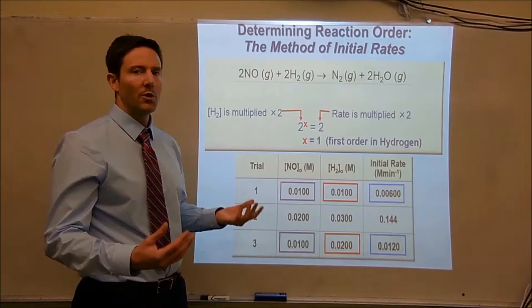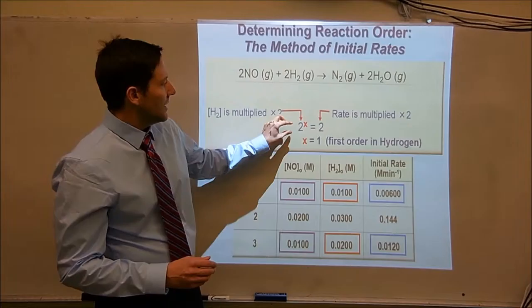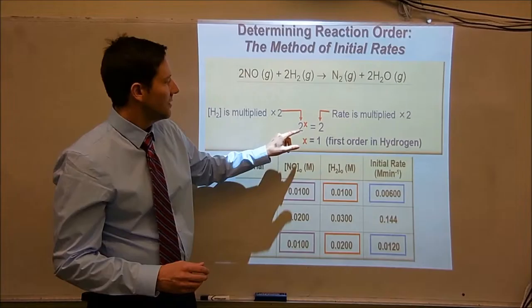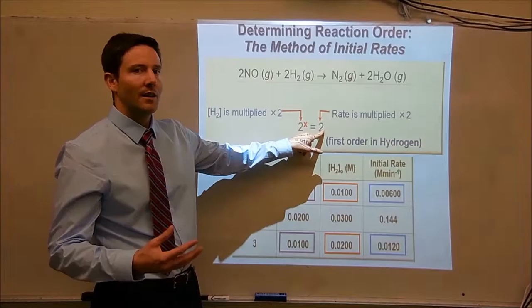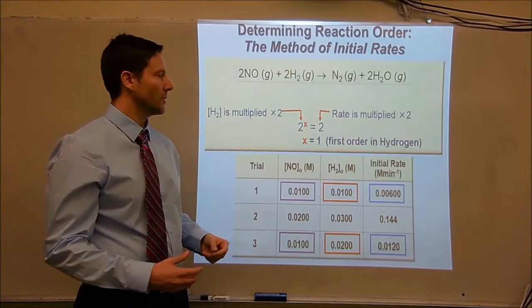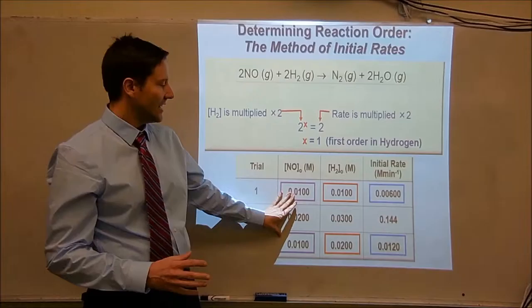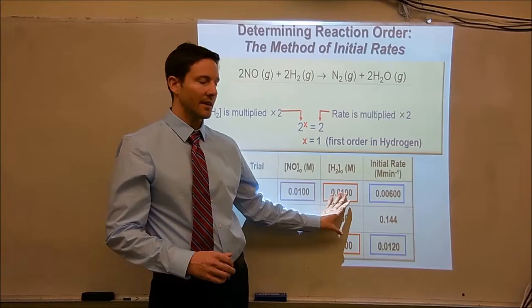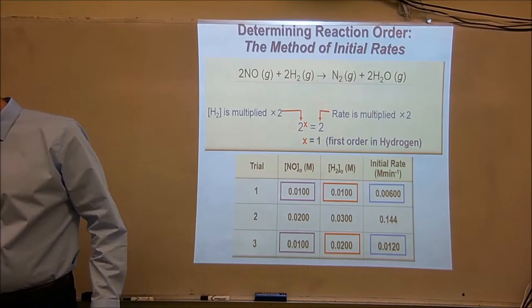The rate goes from 0.006 to 0.012. So in order to find what order hydrogen is in this reaction, hydrogen doubled and the rate doubled. Hydrogen to whatever order it is equals how much the rate increased. So two to the x equals two. Solve for x — x is one. That means you are first order in hydrogen. We know that because we didn't change the concentration of one reactant, but we did change the initial concentration of the other, and that affected the initial rate of the reaction.